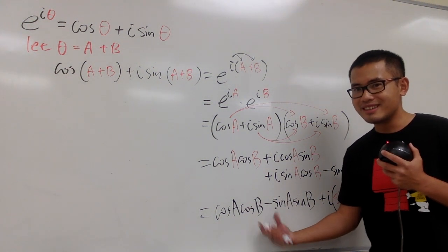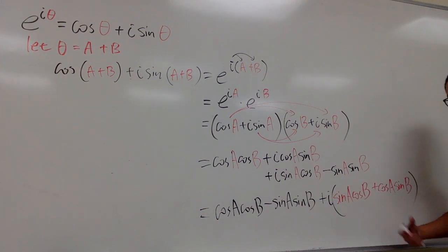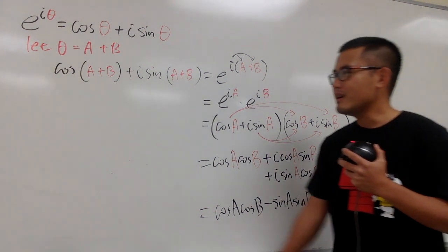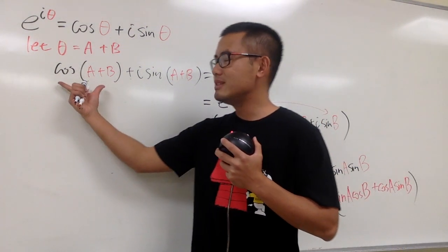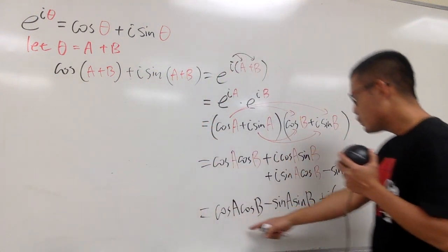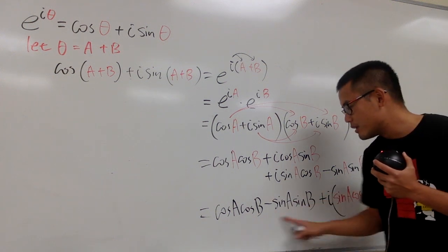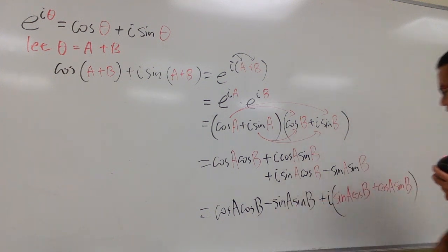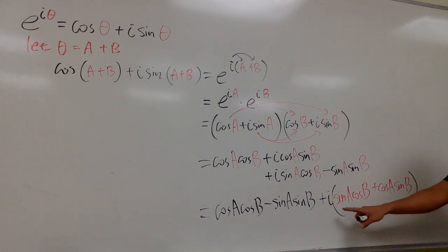Does this look familiar? Does this look familiar to you guys? Well, on the left-hand side, you know this is the real part, and this is the complex part because you have the i. Likewise, on the right-hand side, this right here, they have no i, so they are real. This right here is the complex part because we have the i.